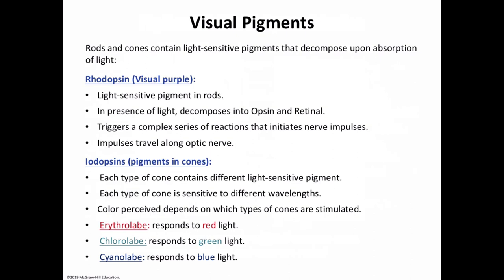Rhodopsin is amazingly sensitive — even starlight bleaches some of its molecules. As long as the light is relatively low intensity, rhodopsin bleaches and the retina continues to respond to light signals. However, in high light intensity, there is wholesale bleaching of the pigment as fast as it is reformed, so the rods become non-functional while the cones still respond. Retinal sensitivity automatically adjusts to the amount of light present. Stereoscopic vision occurs because we have two eyes, giving us slightly different retinal images.